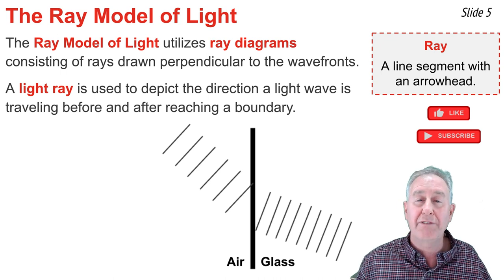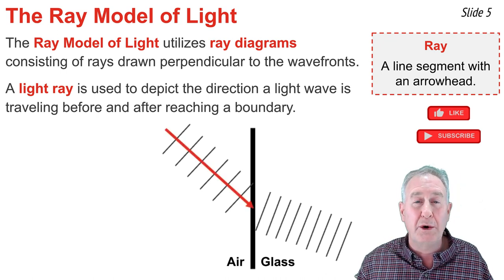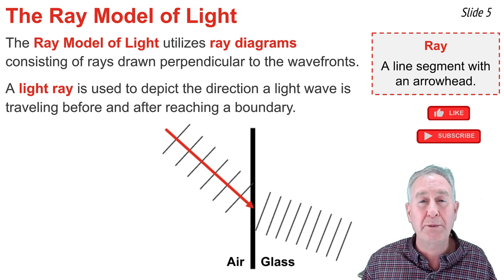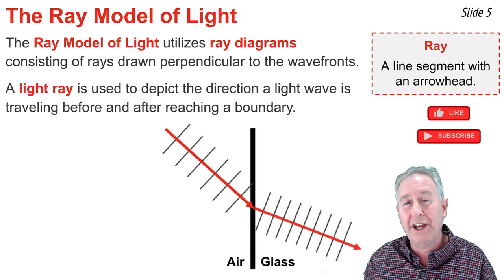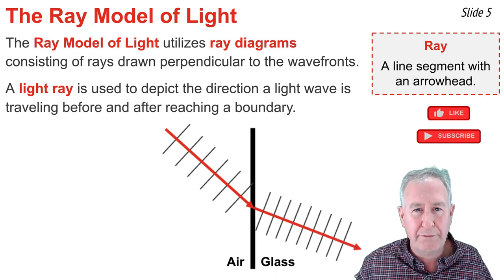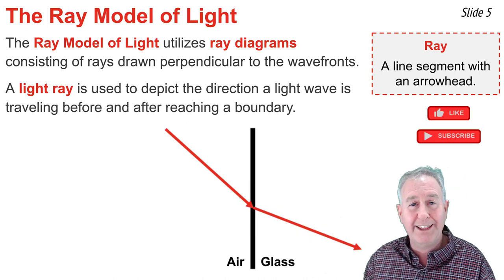And we can represent the direction of the transmitted waves by a different arrow shown here. In a ray diagram, we typically don't show wave fronts. And so a ray diagram for this situation would look something like this.